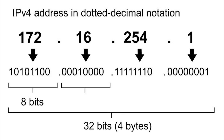Before we get started, we need to go over the IPv4 address structure. Here we have an IPv4 address. There are three dots to separate four groups of numbers called octets. It's called an octet because if you convert the numbers separated by the dot, each is eight digits long in binary. That's why in total there are 32 bits in an IPv4 address.